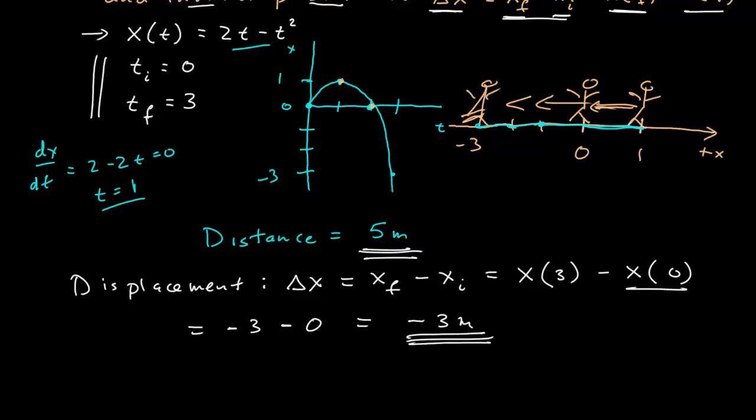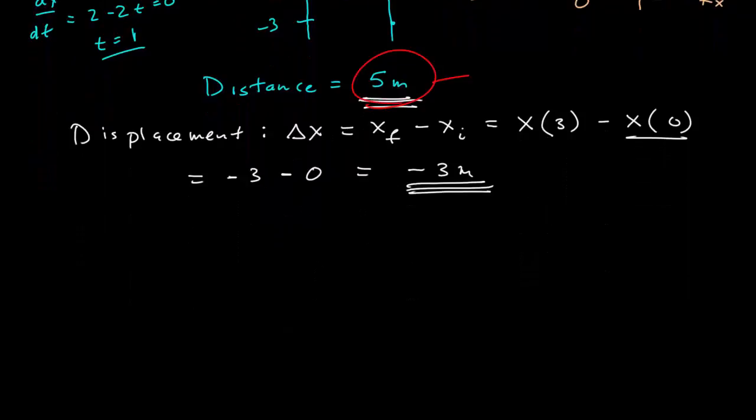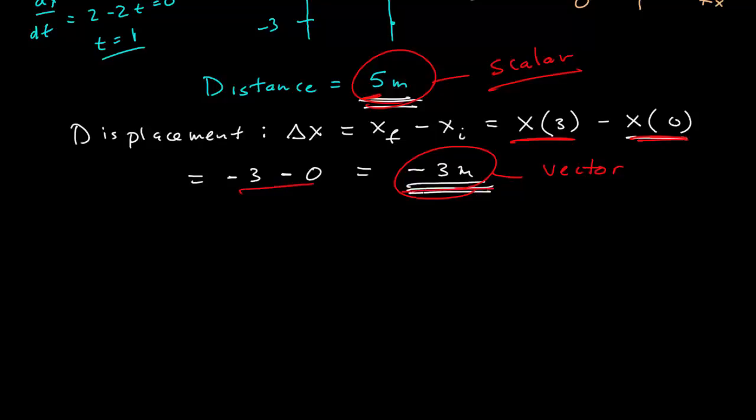This highlights another key difference between displacement and distance. The distance is a scalar. It is the total length traveled. It is represented by a single positive number, while the displacement is a vector. Remember, this is a vector function of time. So evaluating it at two times gives me two vectors. The difference between them is another vector.